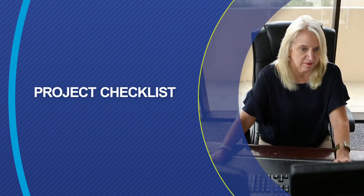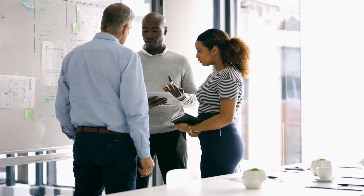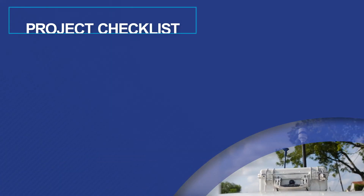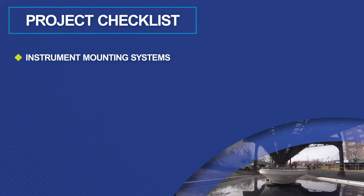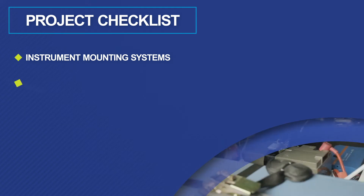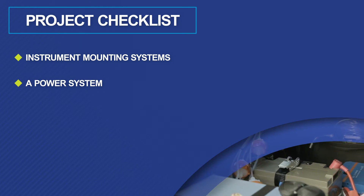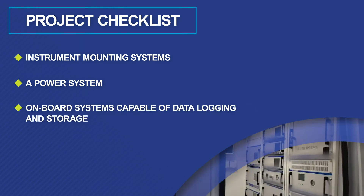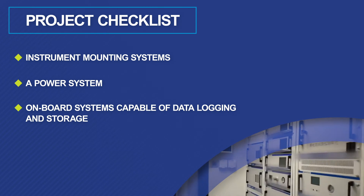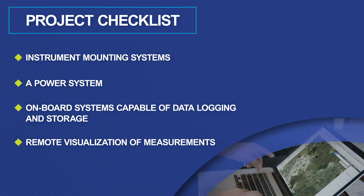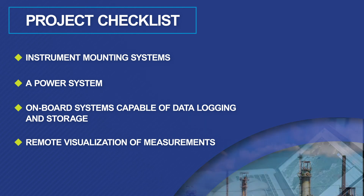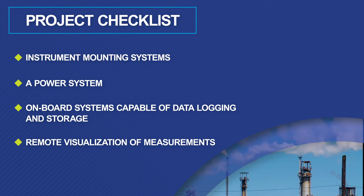Once you decide which vehicles to use as mobile monitoring platforms, there are many project-specific details you'll need to consider. Is the instrument mounting system built to dampen vibration, and is it weatherproof so that it supports the required driving patterns? What about the power system — does it run off engine power or backup power supply? Are the onboard systems capable of data logging and storage for multiple instruments? Can you set up remote visualization of measurements to assess whether your instruments are performing as expected? These are key questions to answer for improved accuracy and durability of your design.